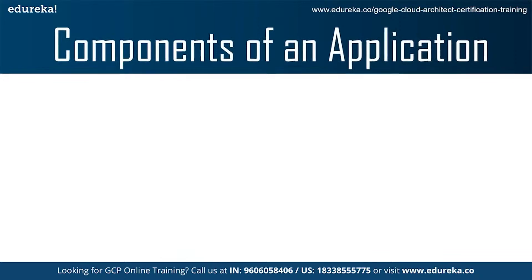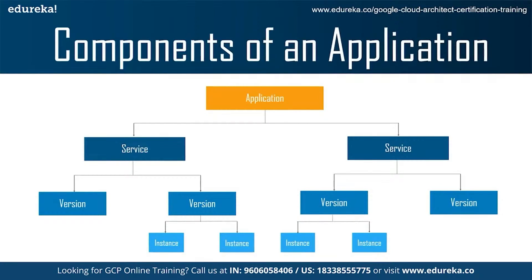Now let's look at the components of an application. The App Engine application is created under your Google Cloud project. When you create an application resource, the App Engine application is a top-level container that includes the service, version and instance resources that make up your app. All your resources are created in the region that you choose, including your app code along with a collection of settings, credentials and your app's metadata. Each App Engine application includes at least one service — the default service — which can hold many versions depending on your app billing status.